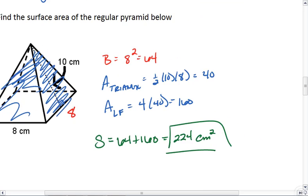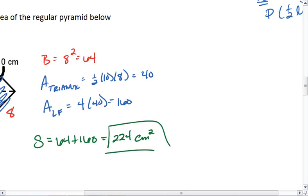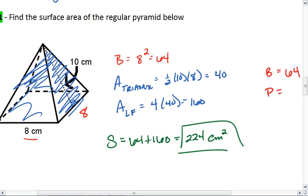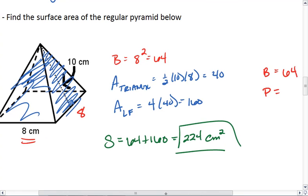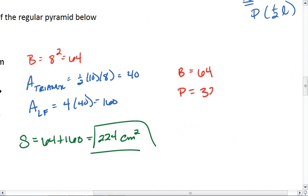The other way I could have solved this is with my equation. Similarly, I would still find that b is 64. I would realize that the perimeter of my square, so I have 8 4 times. The perimeter will be 32, and the slant height is 10.